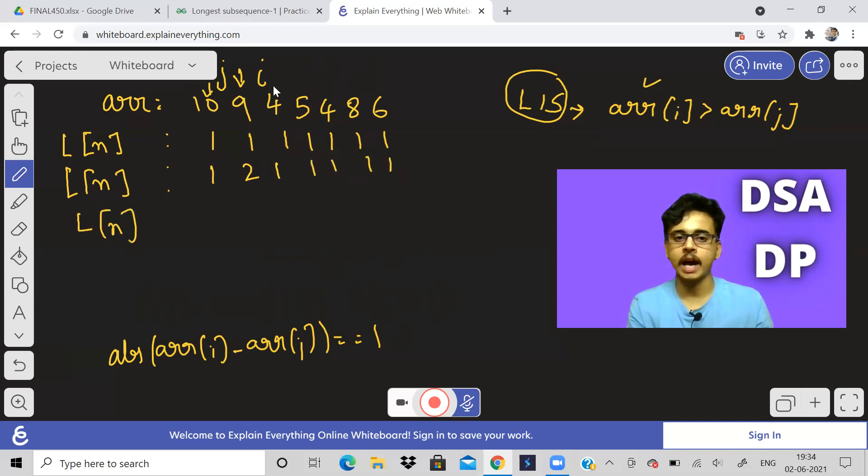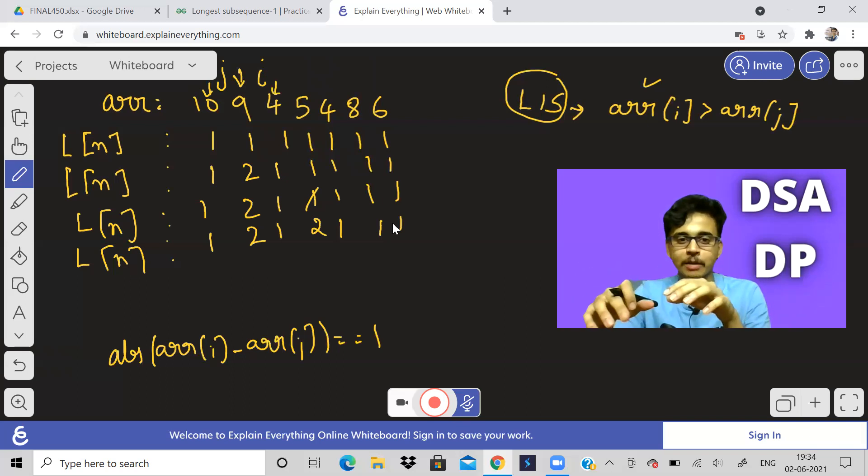So the condition is what? Condition should just be absolute of array of I minus array of J should be equal to one. So over here, it will change to this. And next iteration, I is at four. Nothing will happen. Next iteration, I is at five. For five, five minus four is one. So this value will change to two. So somebody would have already put in the comments, you have done wrong. You have made a mistake. Please correct that. I would like to tell you, please watch the entire video. Sometimes I make mistake, but I might correct it also.